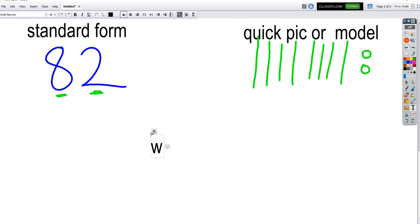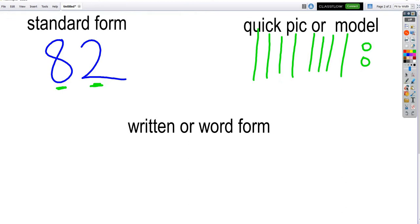There's another way. And it's called written or word form. And when we do written or word form, that's when we actually have to write it with words. We have to spell it out. So, like we know this is the number 82. This is the number 82. 82. And these blocks show 82 because 10, 20, 30, 40, 50, 60, 70, 80, 81, 82. 82 and 82. We have to write 82. So we have to spell it.